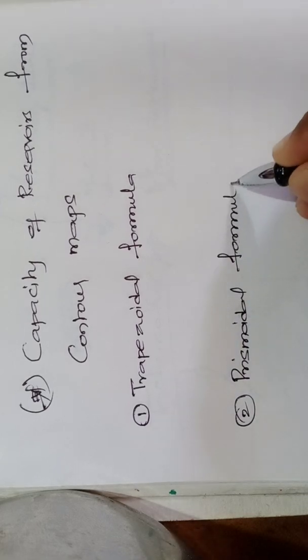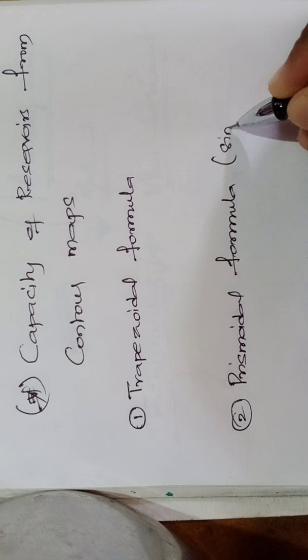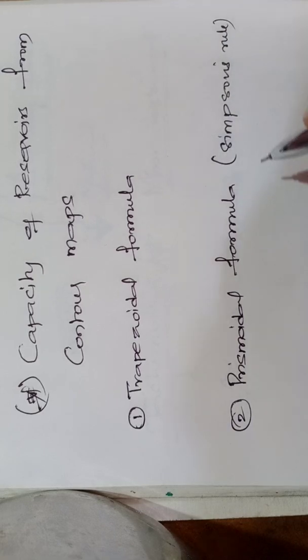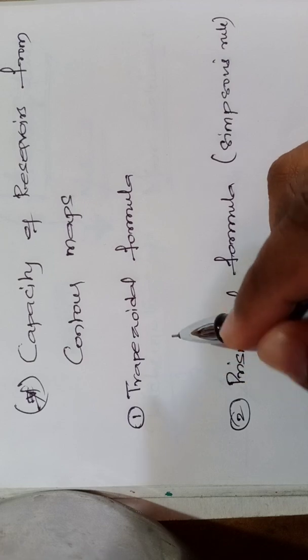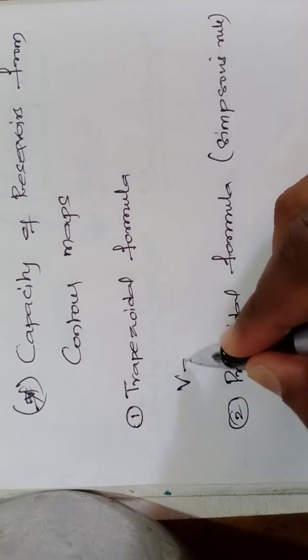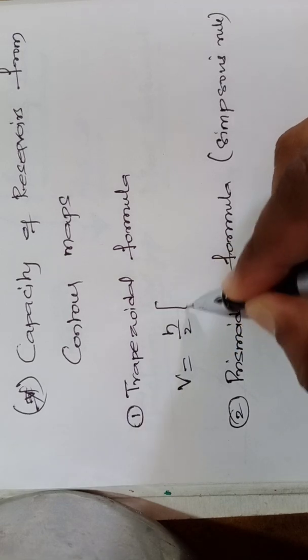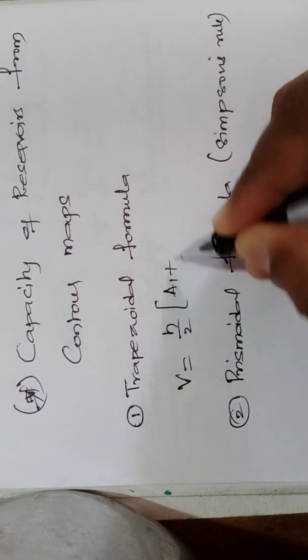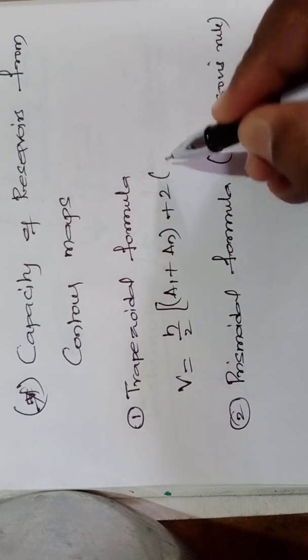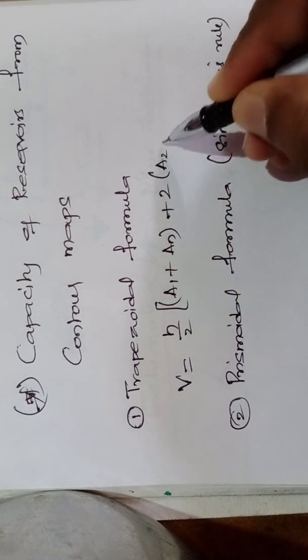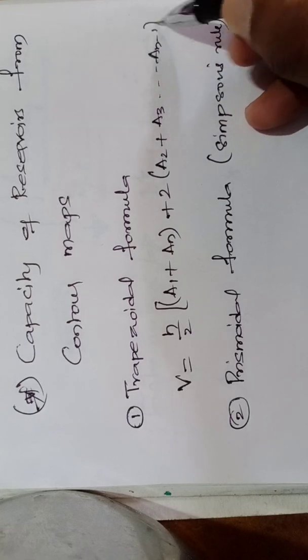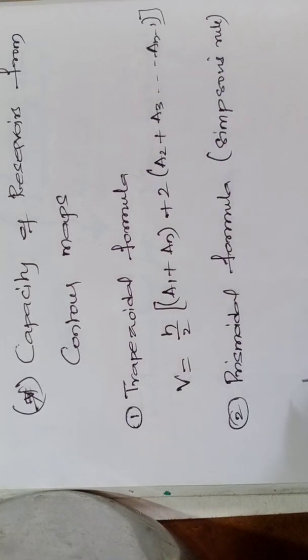Prismoidal formula is also known as Simpson's rule. Now, first of all I will write the formula for trapezoidal. That is volume equals to h by 2, times first area plus last area plus two times of remaining areas.